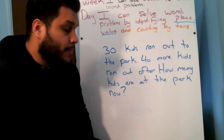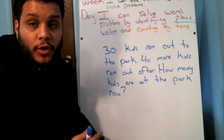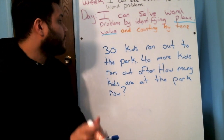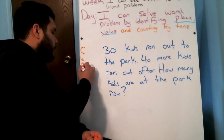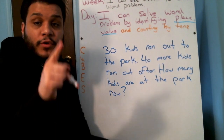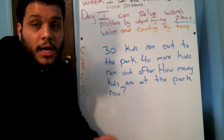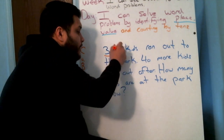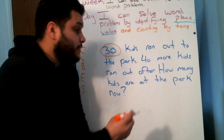How many kids are at the park now? In order to work this out, we know that we're going to start off with our strategy of CUBES. C stands for circle key numbers. What two numbers are our key numbers? 30 and 40.